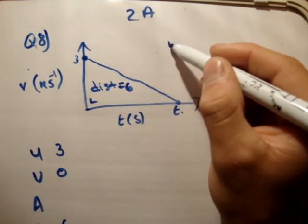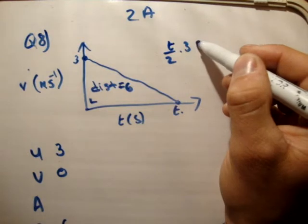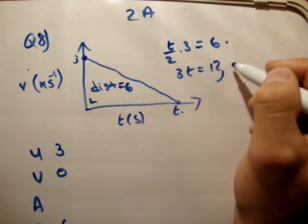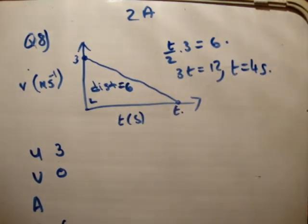So, half the base is t over 2, that's the base, times 3 is equal to 6. 3t is equal to 12, t is equal to 4 seconds. Check that at the back of the book, and that is correct. In fact, t is equal to 4 seconds.